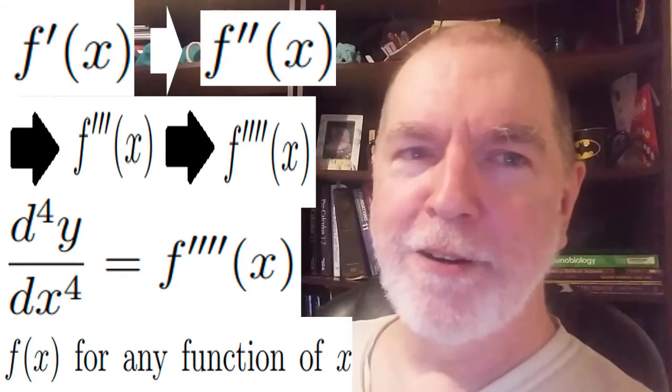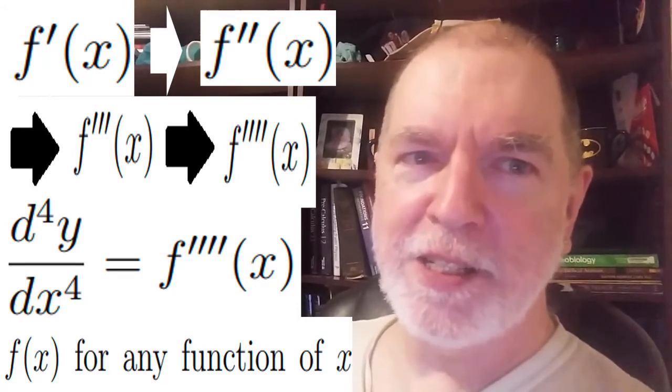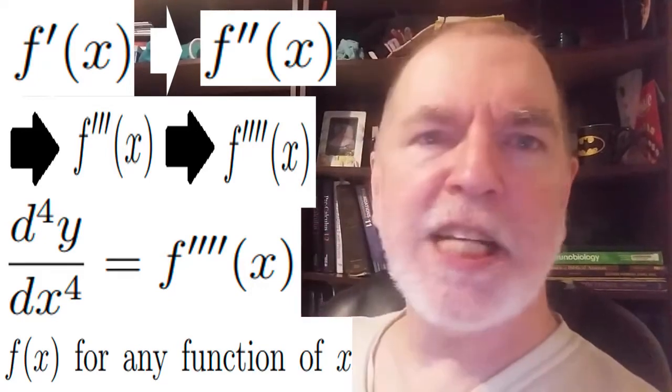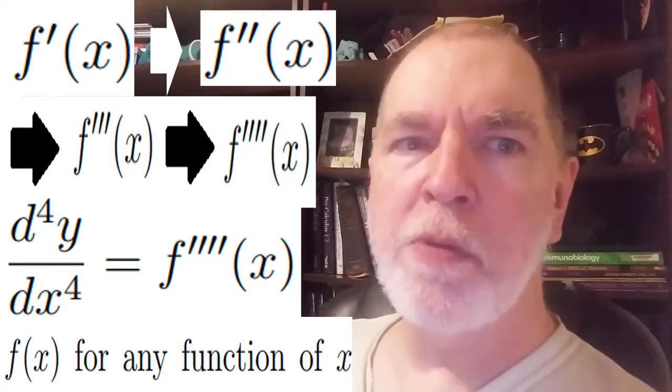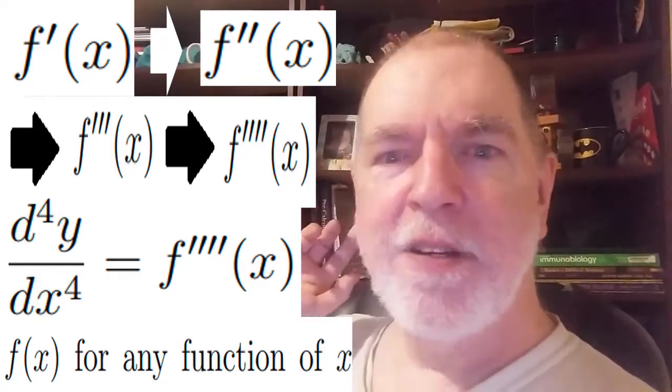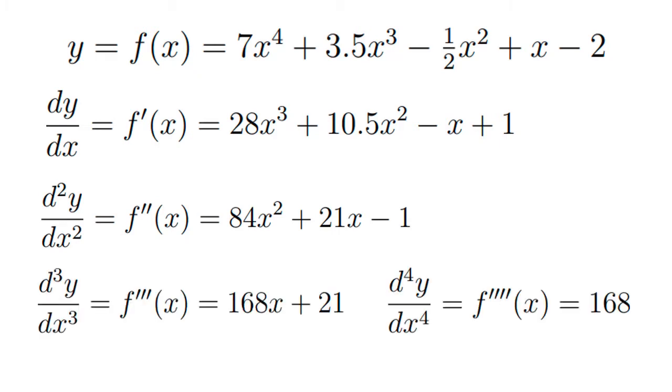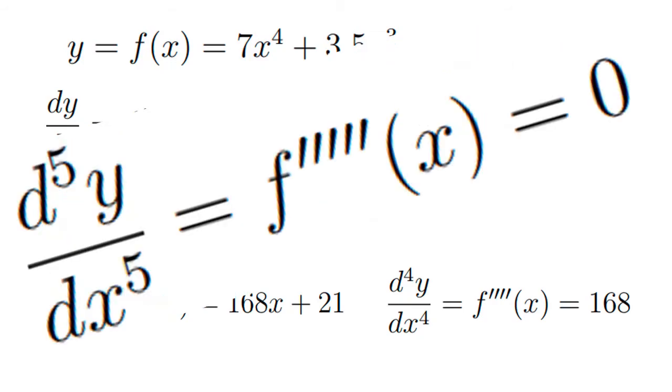So we'll finish off with an example of all these successive derivatives of this polynomial function. We differentiate it into oblivion. There's your first derivative, your second derivative, your third derivative, your fourth derivative. Let's not stop there. Let's take the fifth derivative. And then you can derivatorize as long as you like. Nothing's going to change.